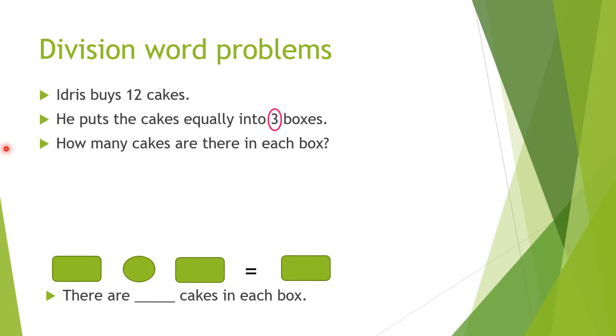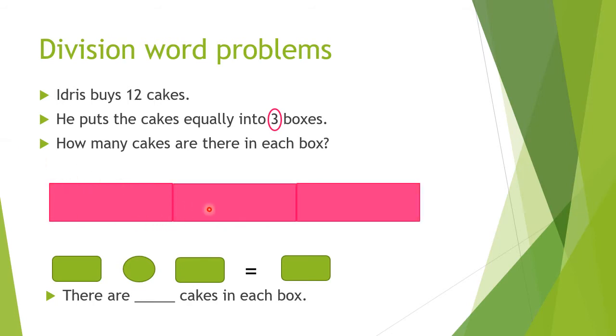So we need to draw 3 boxes. So 3 bars. 1, 2, 3. So there are 3 boxes connected to each other. Next, we choose the bigger number. This one must be the bigger number, so 12.